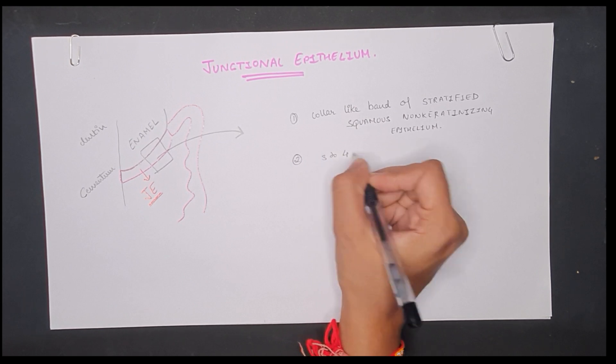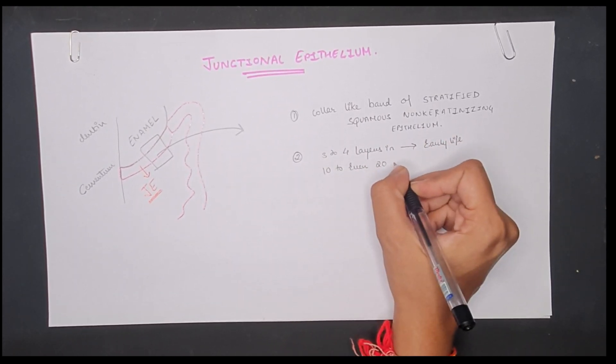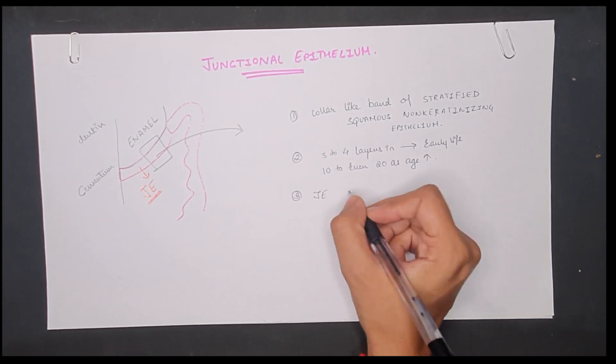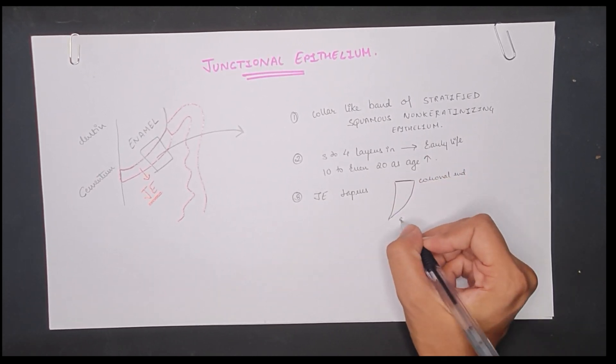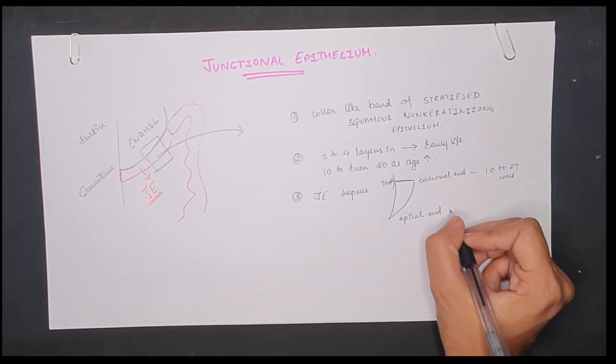It is 3 to 4 layers in early life, but the number of layers increases with 10 to 20 years later on. In addition, the junctional epithelium tapers from its coronal end towards the apical end with 10 to 29 cells to 1 to 2 cells in the apical end.